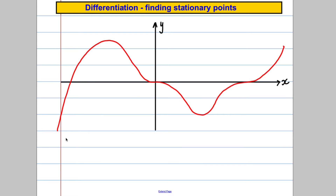I'm going to start by showing you a diagram, and it's important you draw this diagram. In yellow, I'm going to highlight anything where the function is increasing. Along here, up to here, the function is increasing. At the very top, the gradient is zero.